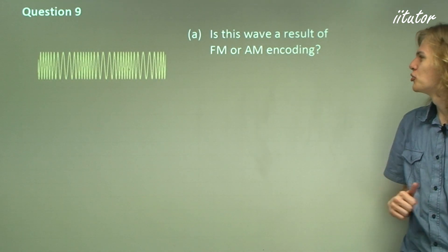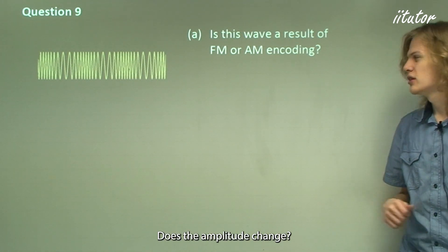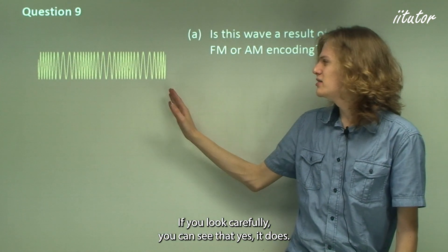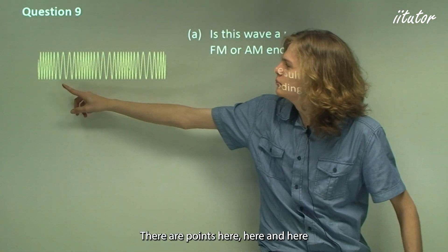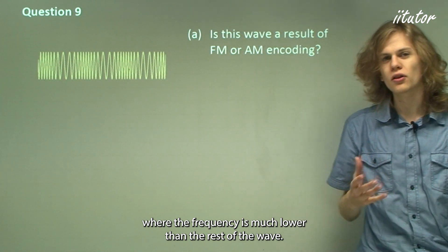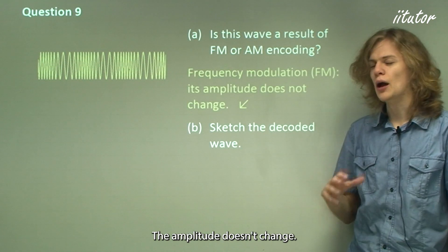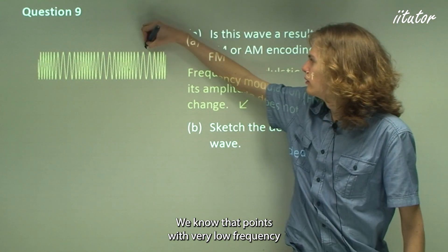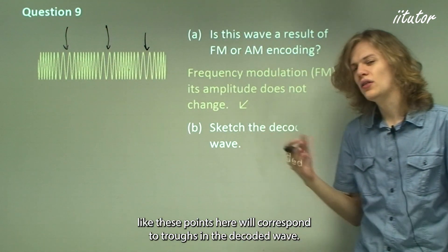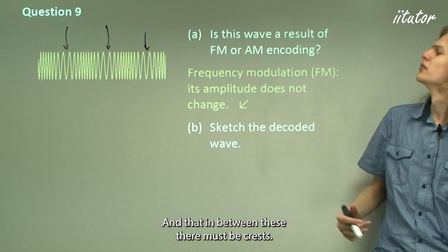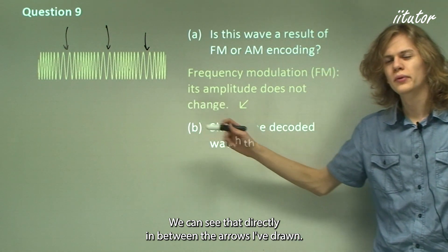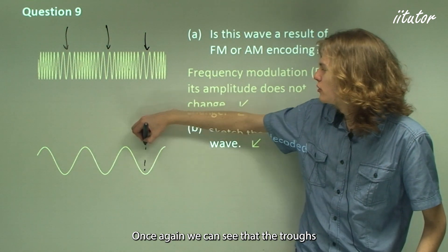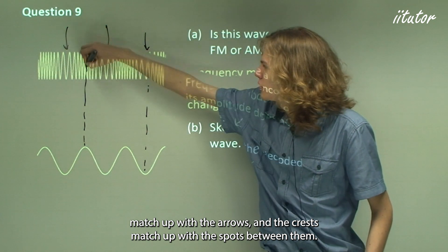Question 9: Is this wave a result of FM or AM encoding? Does the amplitude change? No, it stays the same. Does the frequency change? Yes — there are points where the frequency is much lower than the rest of the wave. So it is frequency modulation. To sketch the decoded wave: points with very low frequency correspond to troughs, and points between them with high frequency correspond to crests. The decoded wave's troughs match the low-frequency arrows and crests match the high-frequency spots between them.